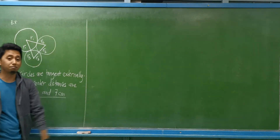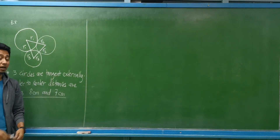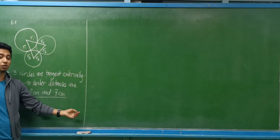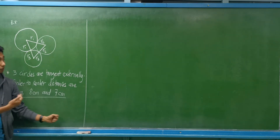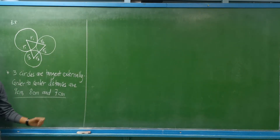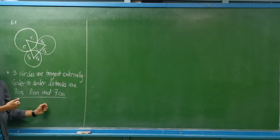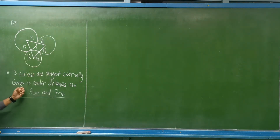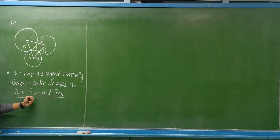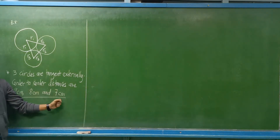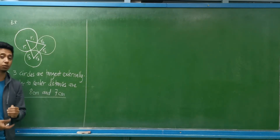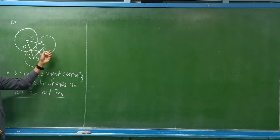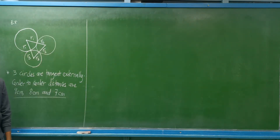Let's have an example: an application of Gauss-Jordan elimination for solving systems of linear equations. We have three circles that are tangent to each other externally. The center-to-center distances are 9 centimeters, 8 centimeters, and 7 centimeters. We are required to determine the radii of these three circles.